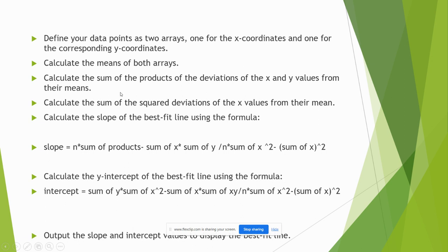By this we have to calculate means of both arrays. First of all we have to calculate sum of the products or deviation of X and Y values from their means, sum of the squared deviations of X values from the mean. A represents slope and B represents intercept. Slope is calculated by n into sum of products minus sum of X and sum of Y by n into sum of X square minus sum of X whole square.